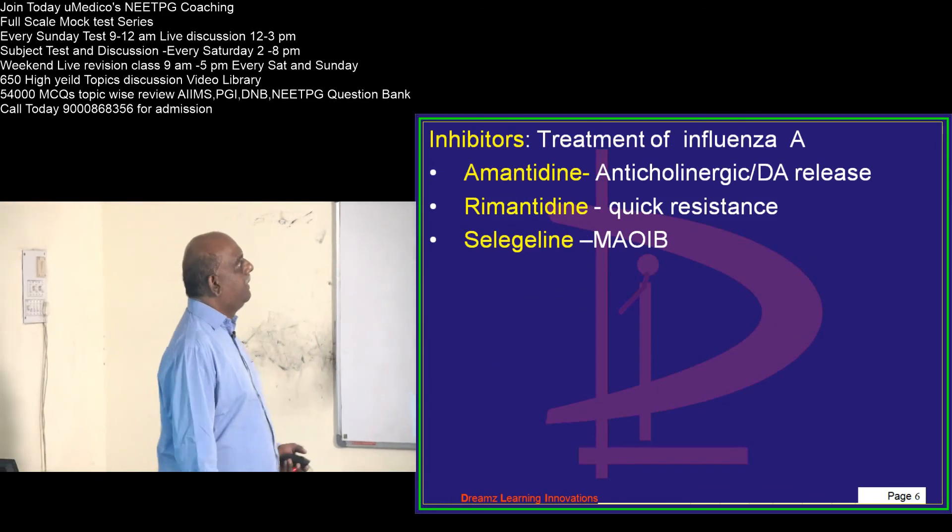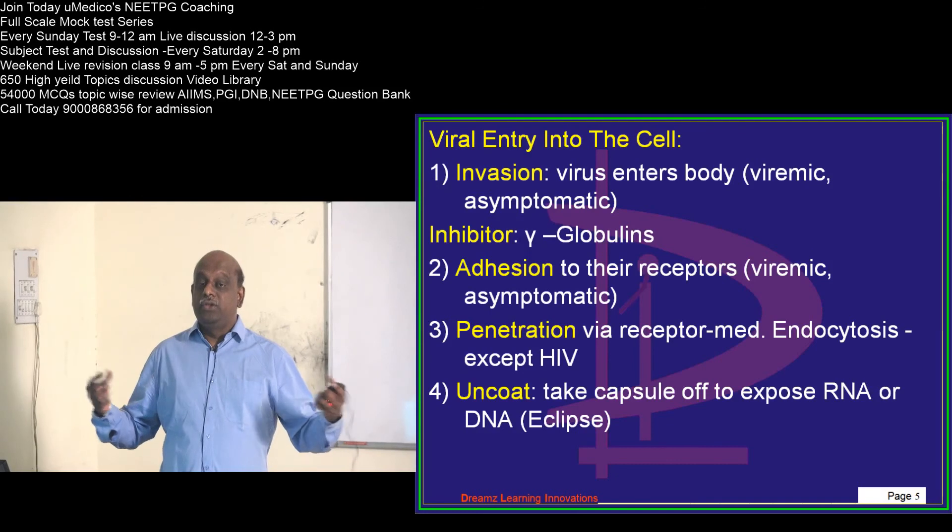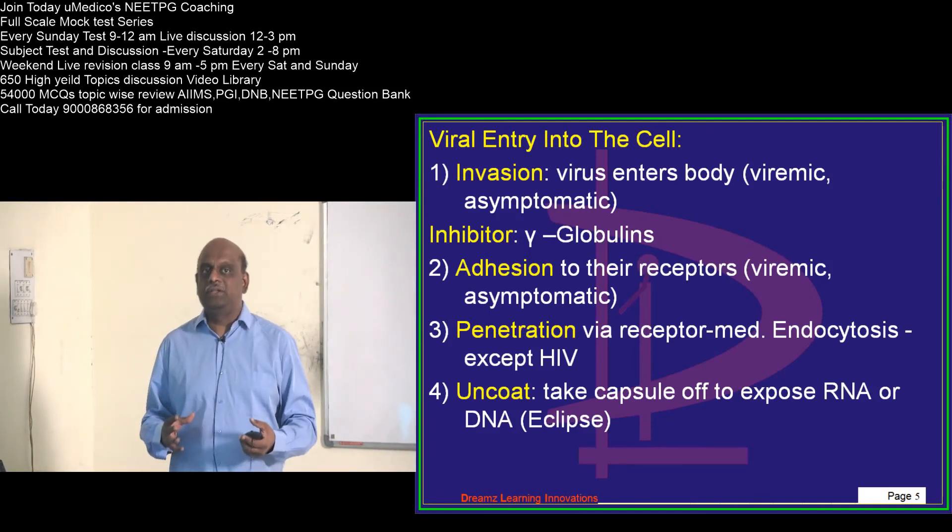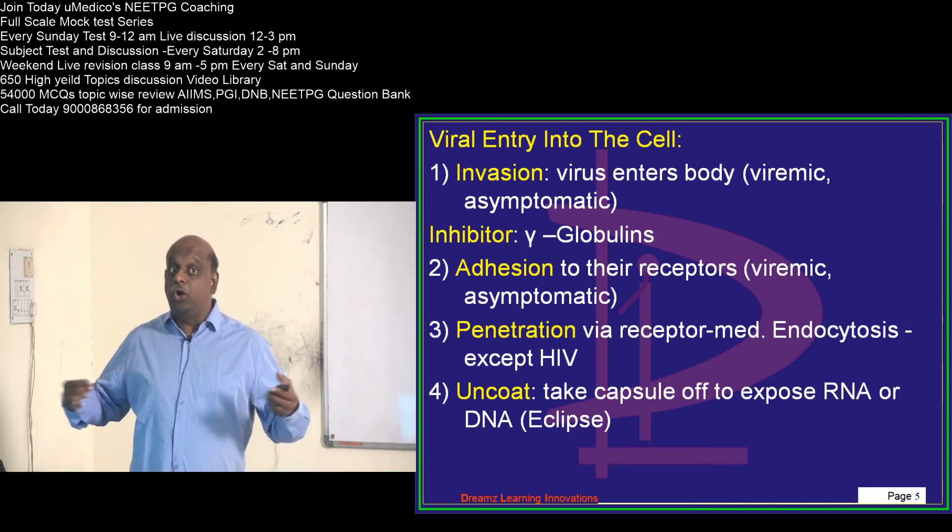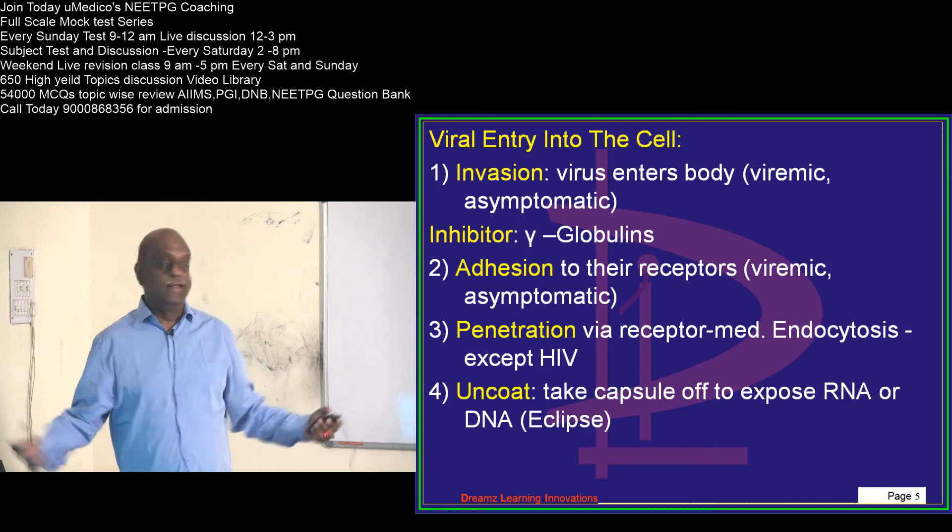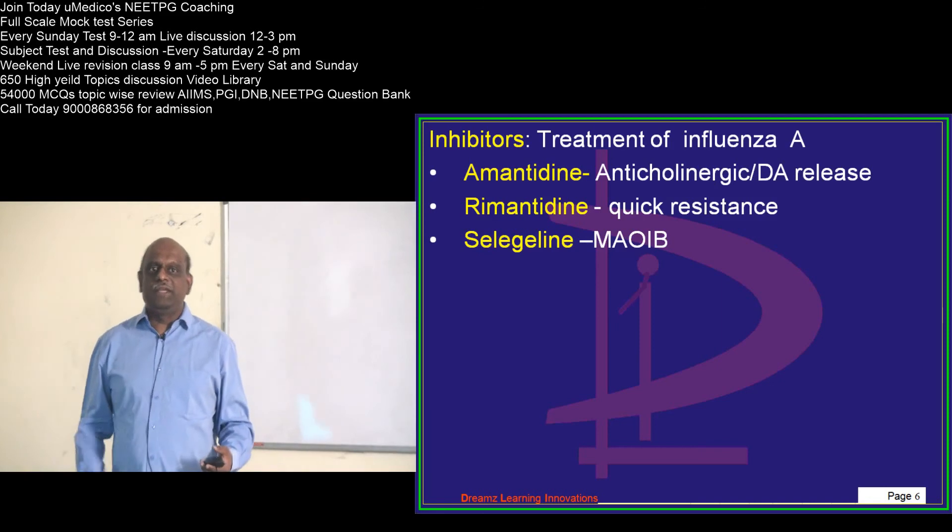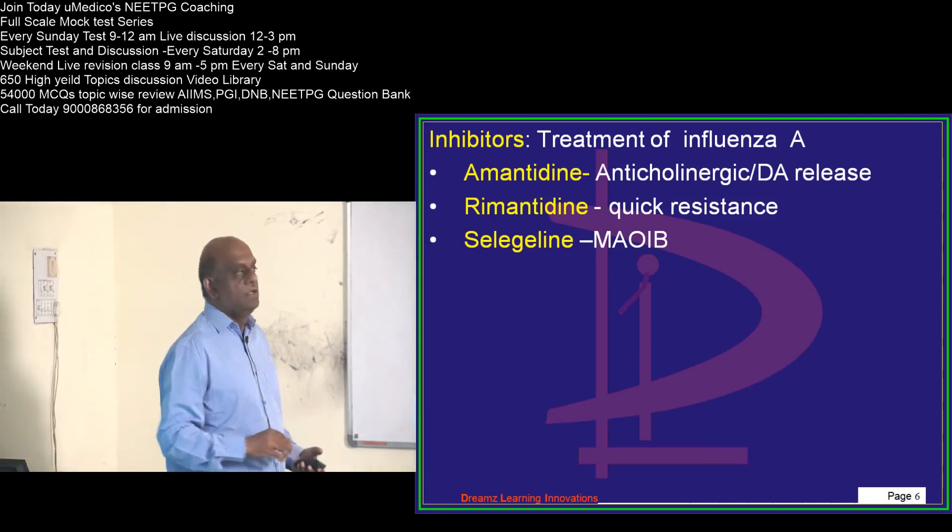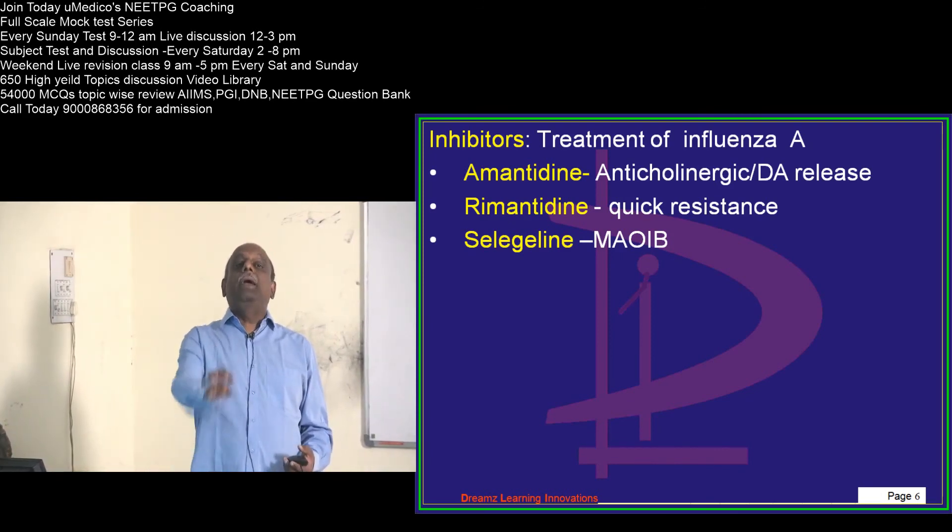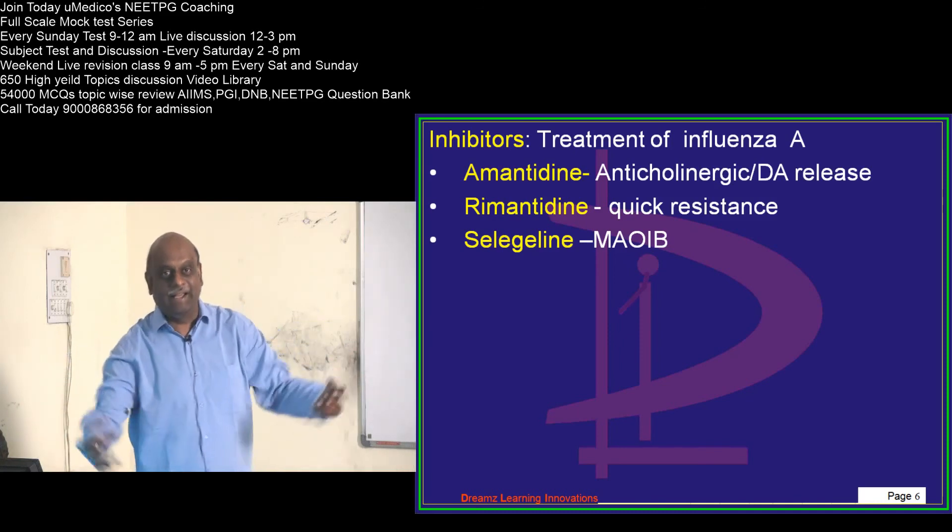Then they will remove their coat - uncoating - and expose the RNA or DNA. That phase is called the eclipse phase. There are certain inhibitors which are antiviral agents which will interrupt this uncoating process. They won't let the coat be removed. What are they? Amantadine and rimantadine, which are antiviral agents used in treatment of influenza A whose main mechanism is prevention of uncoating.